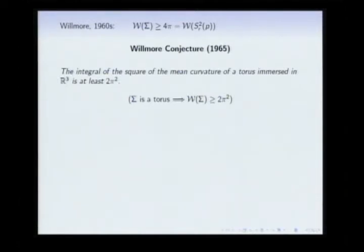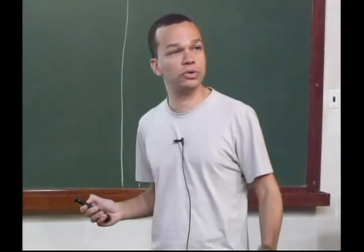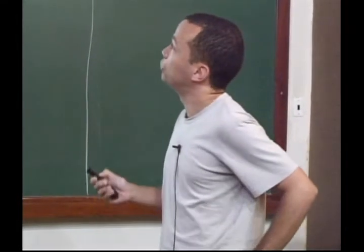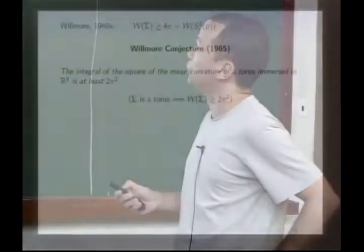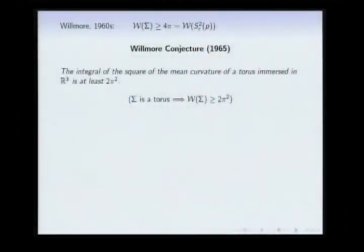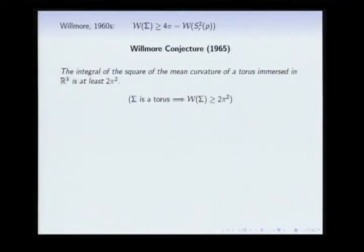This answers the question for genus zero, so Willmore made a conjecture about the best surface for genus one — the best torus in Euclidean 3-space. The 1965 conjecture says that the integral of the square of the mean curvature of a torus immersed in ℝ³ should be at least 2π². So if Σ is a torus, its Willmore energy should be at least 2π². This number is of course bigger than 4π.